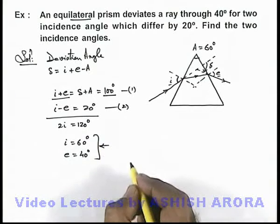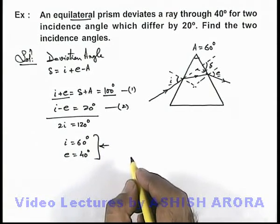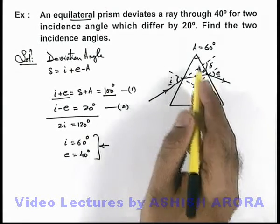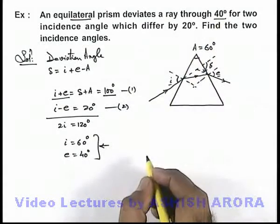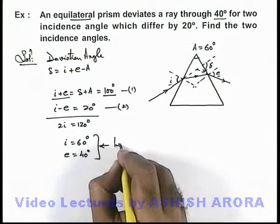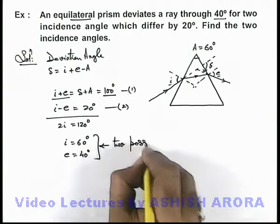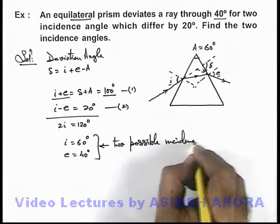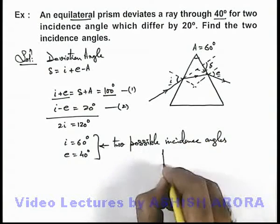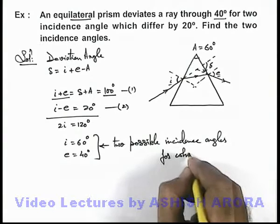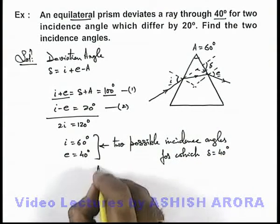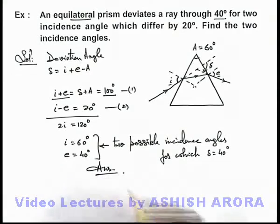So these are the two incidence angles for which the deviation angle will remain same, and here it is given that the value of delta is 40 degrees. So these are two possible incidence angles for which delta will be equal to 40 degrees, and these will be the answers to this problem.